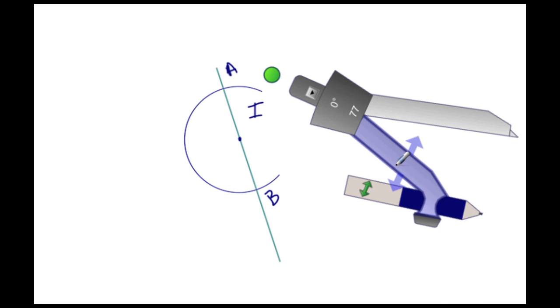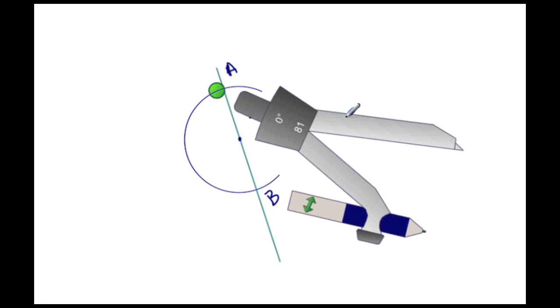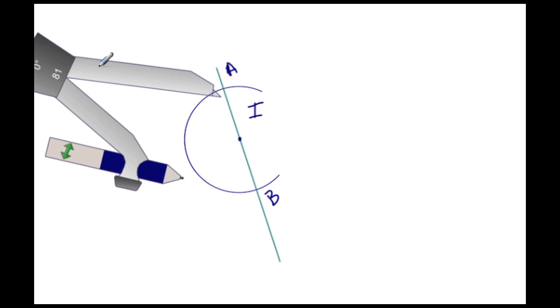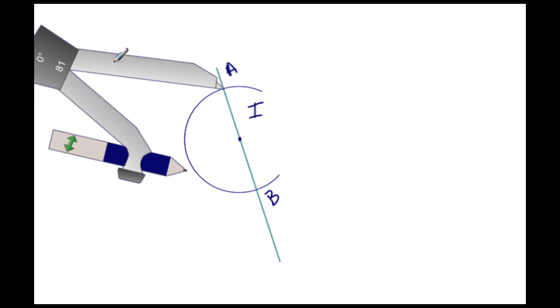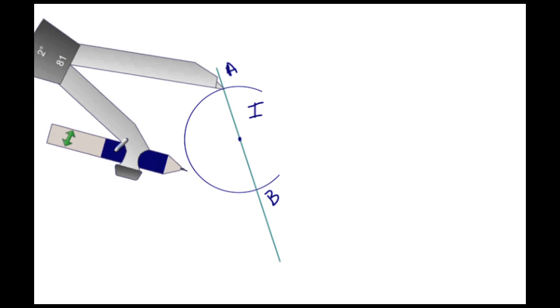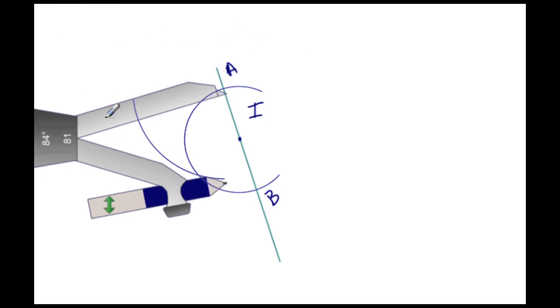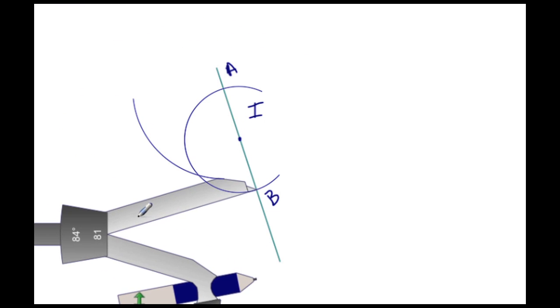And now let's place the pointy end on intersection A and we're going to draw another arc, and then we're going to place the pointy end on intersection B.